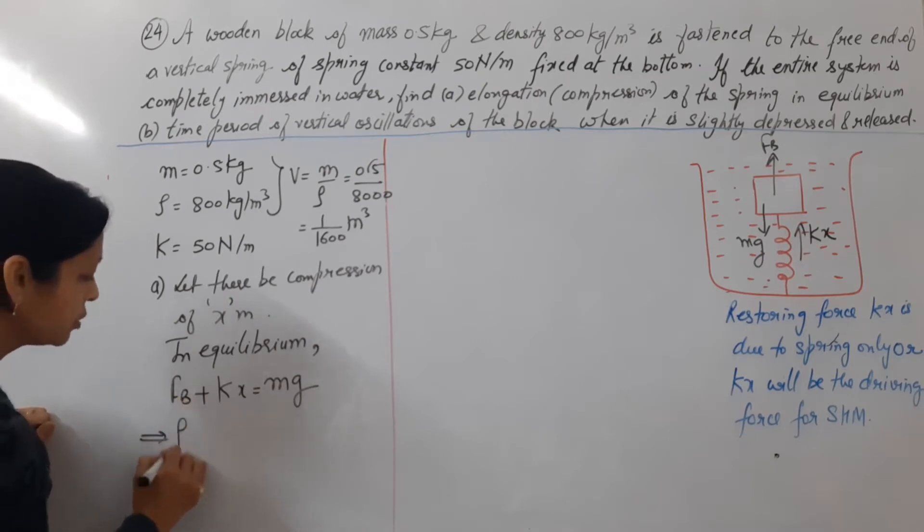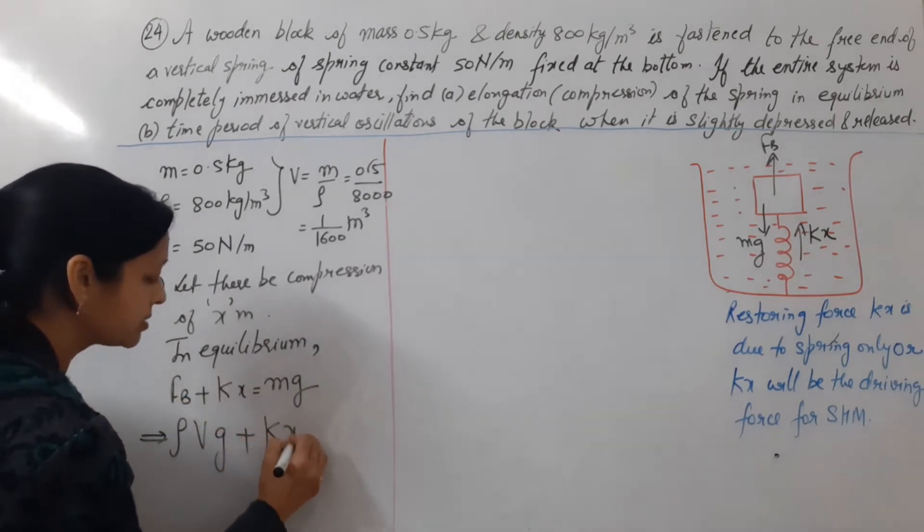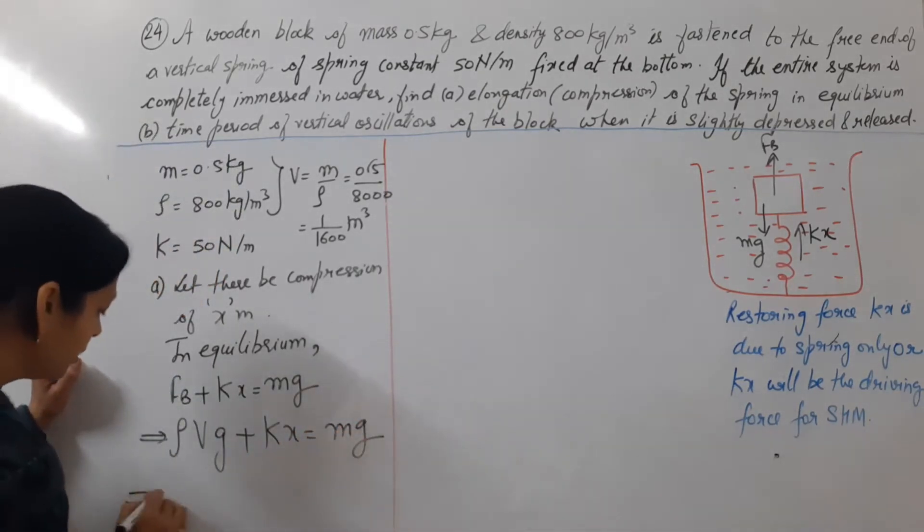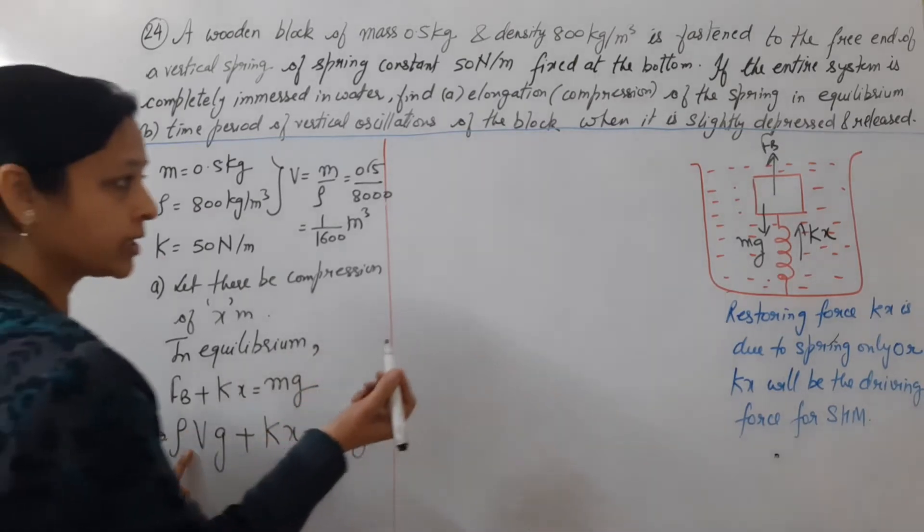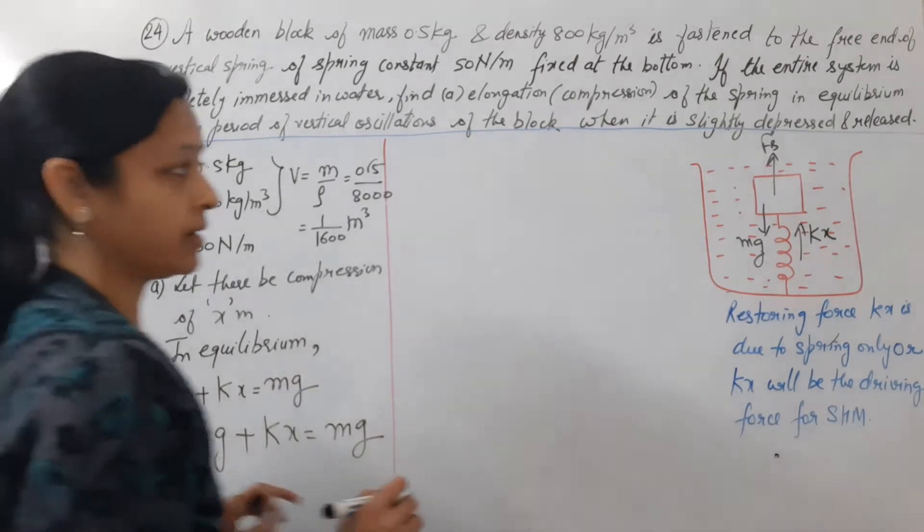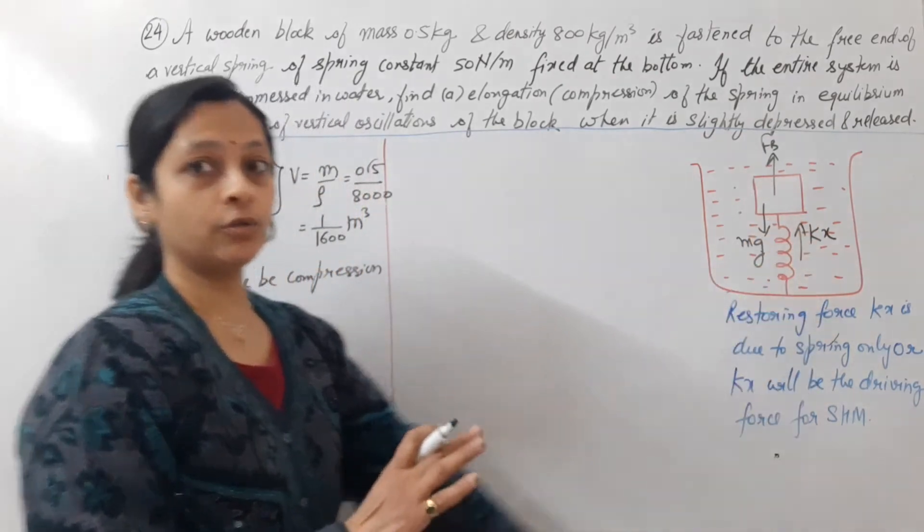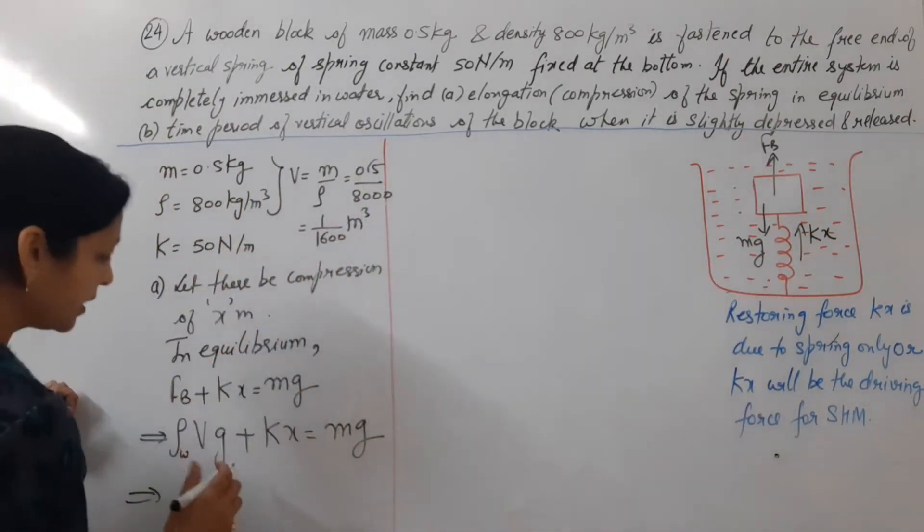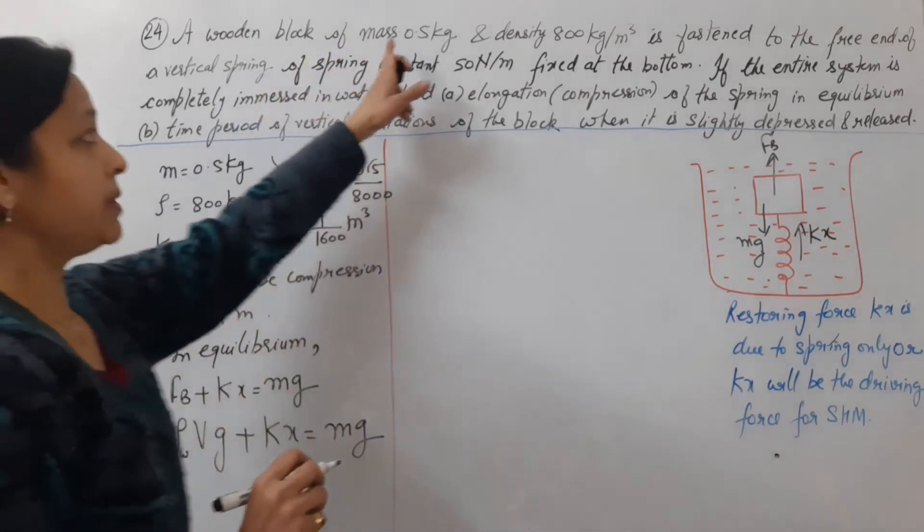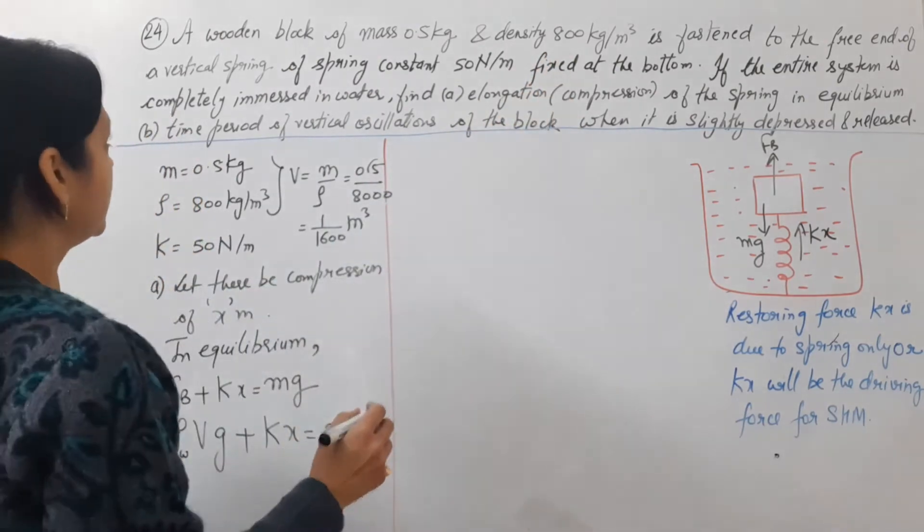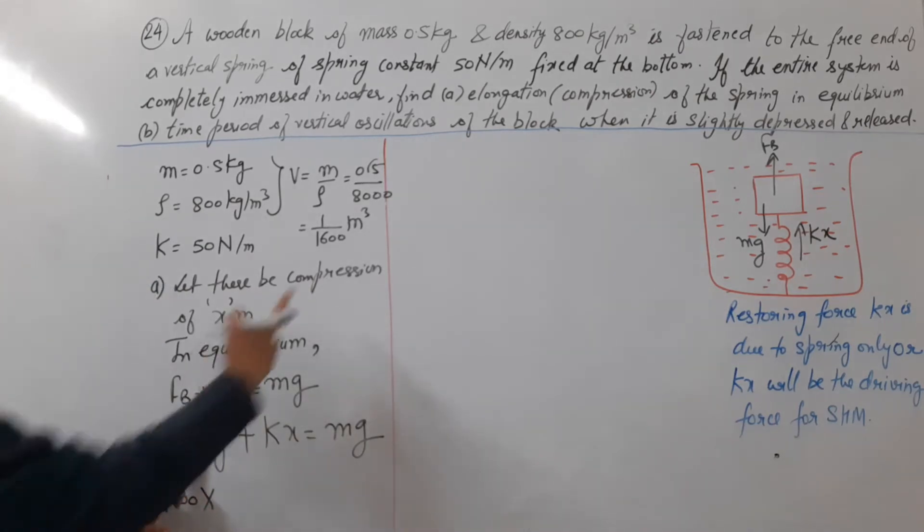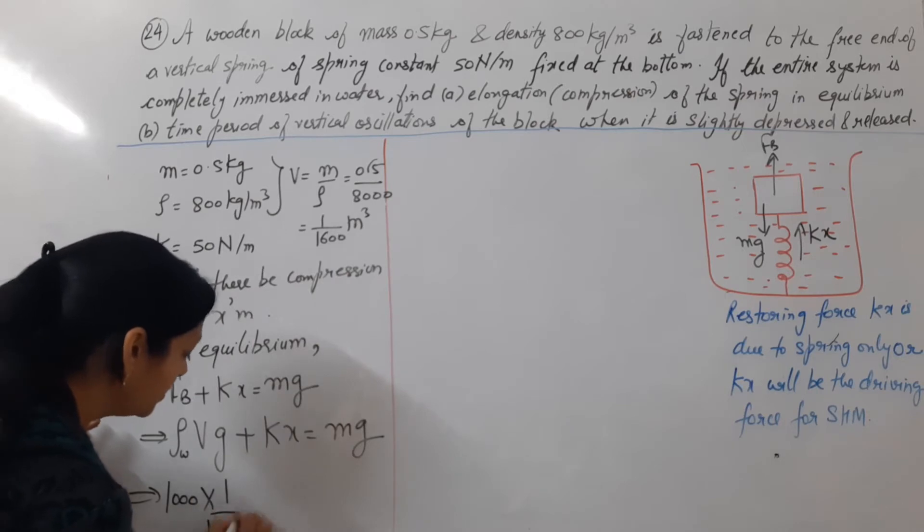Now, thrust is rho vg plus kx equal to mass. Density here is density of water. And v is volume of immersed part. Here the whole part is immersed. So the volume we will put. Density of water, because all units are given, density of water is 1000 kg per meter cube. Volume of immersed part, volume is 1 by 1600 into g.